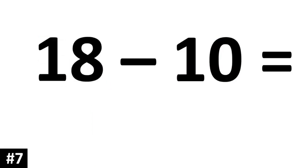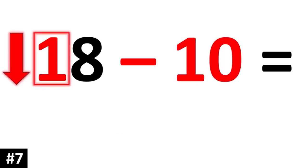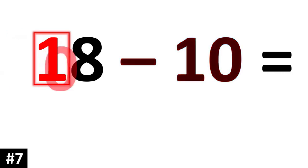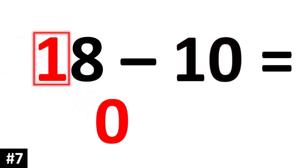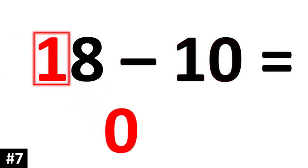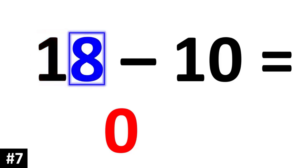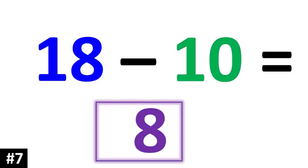18 minus 10. Subtracting by 10 means the tens digit is going to go down by 1. So that 1 is going to go down to 0. And we have a ones digit of 8. So 18 minus 10 is 8.